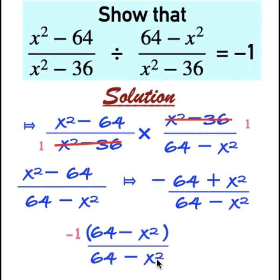We have 64 minus x squared here and 64 minus x squared here. They will cancel each other. And what is remaining is minus 1, which is exactly what we are asked to prove.